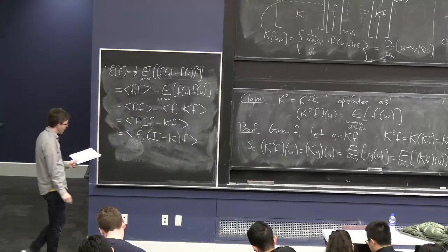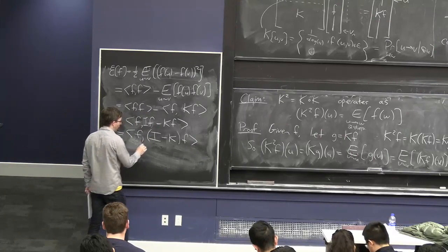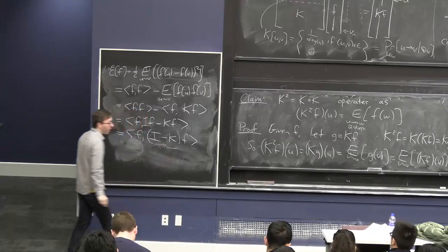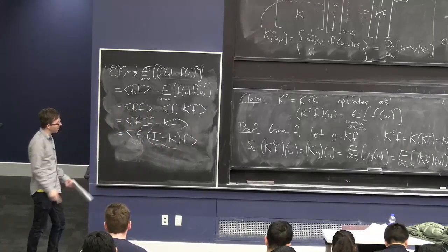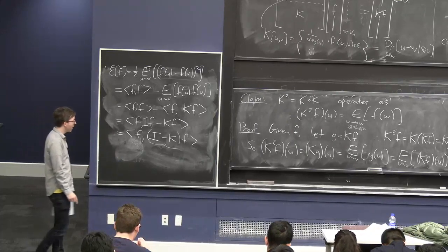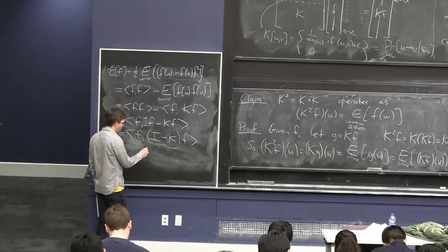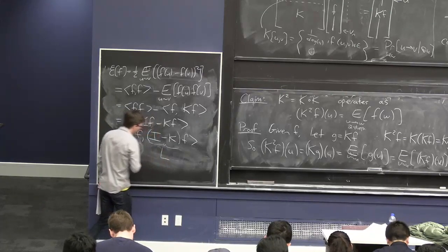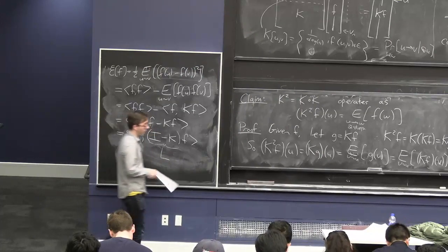Having done this, this allows me to introduce one more major player in spectral graph theory: this matrix. It's just a small tweak on K — you subtract K from the identity matrix. But it has a special and glorified name: L. It's basically the Laplacian of the graph.